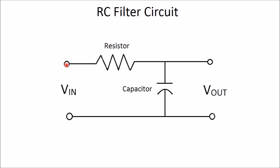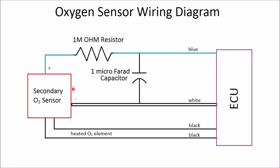To do that we're going to use an RC circuit — that's basically a resistor wired in series and a capacitor wired in parallel to your voltage outputs. Now we get to the wiring diagram on the car. We've got the secondary O2 sensor which comes off of the catalytic converter. It's got a blue wire as well as a white wire. The blue one is positive — you cut it and put in a 1 megaohm resistor as well as a capacitor in parallel, and then that goes to the ECU.